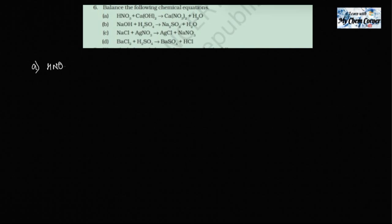Hello everyone, welcome back to my Chem Corner. In today's video we are going to do question number six, which is 'balance the following chemical equations.' There are four chemical equations given to us and we need to see how to balance them. The first one is HNO₃ plus Ca(OH)₂ giving Ca(NO₃)₂ plus H₂O.